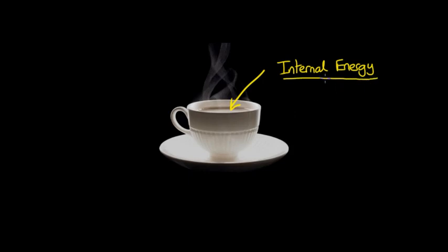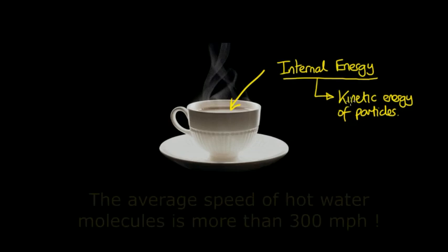Firstly, we've got the kinetic energy of the particles. This is the energy due to their movement, and they could be vibrating, or if it's a gas, they could just be flying in straight lines until they collide with another molecule or particle or a wall.